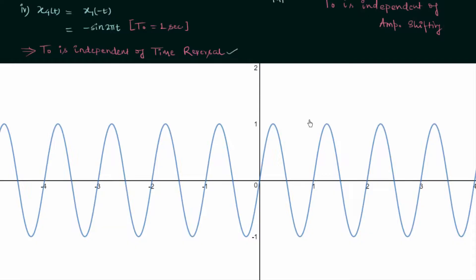On your screen you can see the plot of x1(t) — it is a simple sin(2πt) plot. If you see the waveform you can clearly point out the fundamental time period; it is equal to 1. From here to here is the fundamental time period, equal to 1, because after this period the signal is repeating itself. Now we will quickly shift this waveform upward by 1 so that we have x6(t).